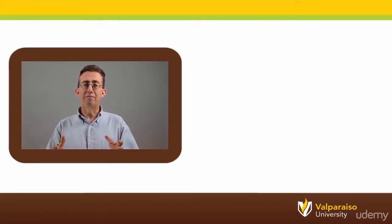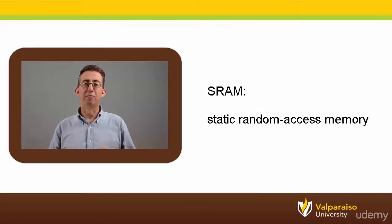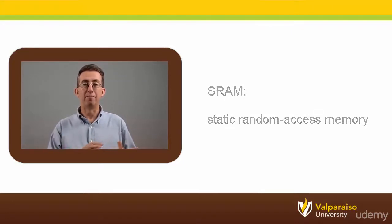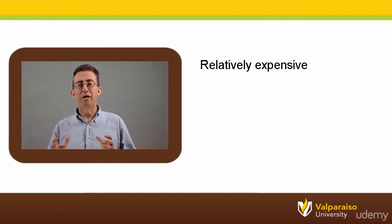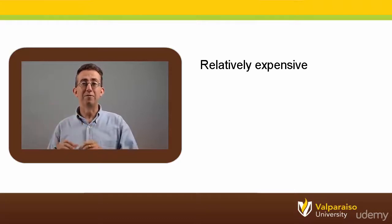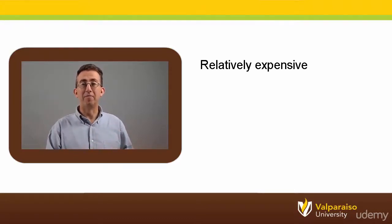The first type of data memory we will look at is static random access memory, or SRAM. Note: when talking about microcontrollers, people often just say RAM when they're really referring to SRAM. Static RAM is relatively expensive to manufacture, which is why traditionally microcontrollers have often featured 8 or even 16 times as much program memory as SRAM data memory.